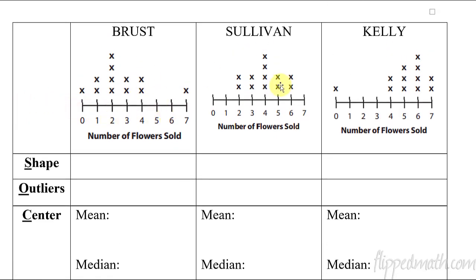So we have here some data sets with a number of flowers that have been sold. Mr. Brust's class, Mr. Sullivan's class, and Mr. Kelly's class. We have three different classes that are selling some flowers. These represent each student. One of Mr. Brust's students didn't sell any. One of Mr. Brust's students sold seven. And then you have Mr. Sullivan's in here, a couple students sold two, a couple sold three, four kids sold four, two more kids sold five. So that's just these data sets. What we're trying to do is describe these things. So what is the shape of each one of them?